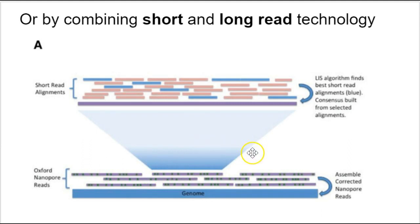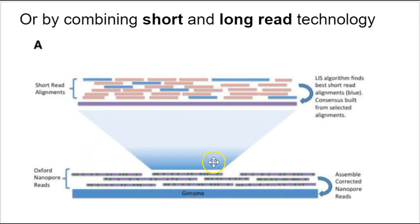You could also combine short and long read technology. You could take your short Illumina reads and much longer reads from, say, the Oxford Nanopore MinION or more standard systems. Combining those two pieces of information, you could get much longer structures — scaffolds, or perhaps even whole genomes. With that, I'm going to stop this part of the lecture and carry on with part two.